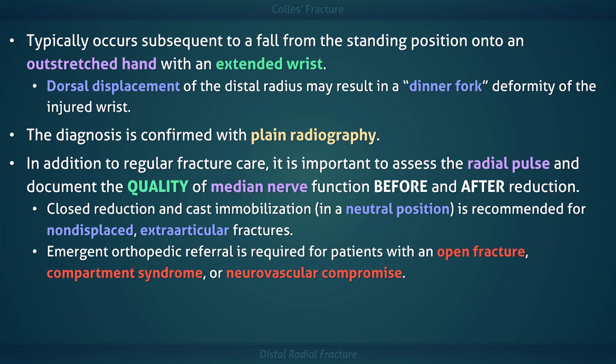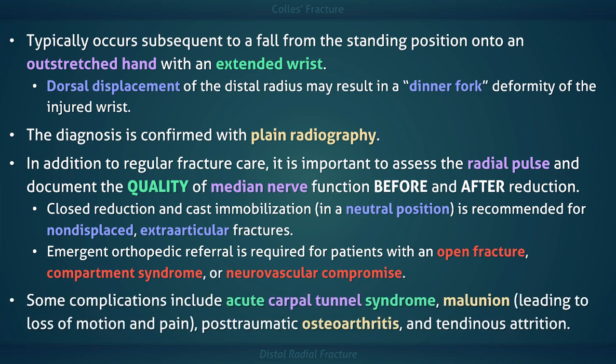With that in mind, displaced fractures with neurovascular compromise require immediate closed reduction. Some of the complications that can occur with a Colles' fracture include acute carpal tunnel syndrome, malunion which can lead to loss of motion and pain, post-traumatic osteoarthritis, and tendinous attrition which can lead to tendon rupture.